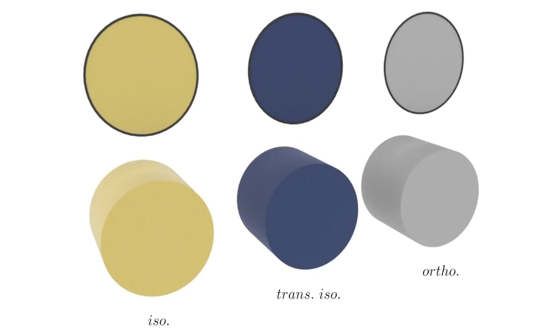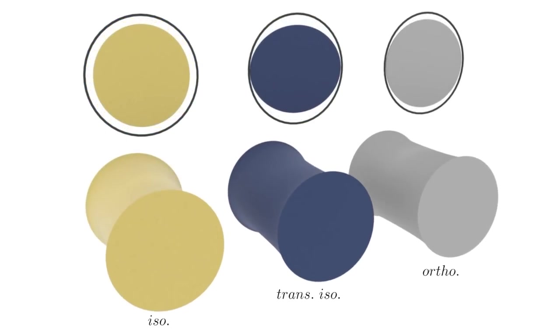We stretch three tubes using isotropic, transversely isotropic, and orthotropic elasticity to demonstrate how the cross sections differ during simulation. Notice how the strengthened directions keep their shape.